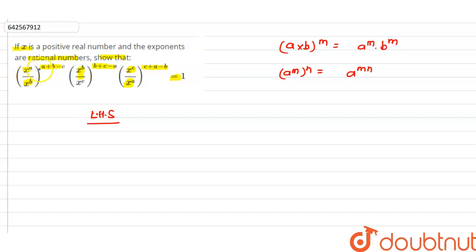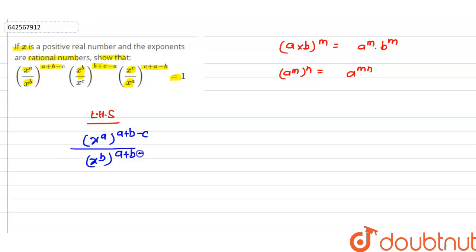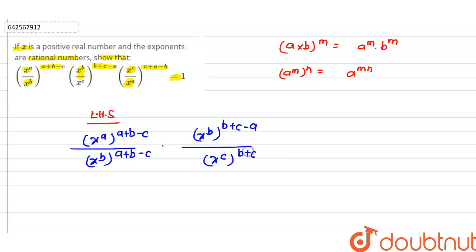So we have (x^a)^(a+b−c) in the numerator and (x^b)^(a+b−c) in the denominator, multiplied by (x^b)^(b+c−a) in the numerator and (x^c)^(b+c−a) in the denominator, and (x^c)^(c+a−b) in the numerator and (x^a)^(c+a−b) in the denominator.